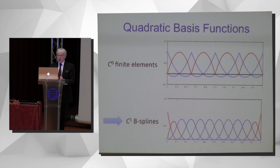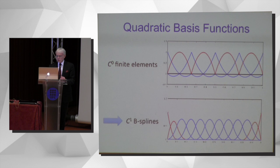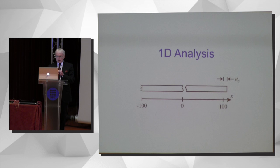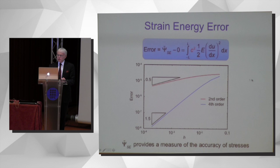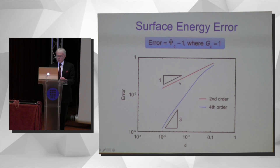To have a simple implementation of the fourth-order theory, you need smooth basis functions, unless you want to go to mixed methods with finite elements — which will give suboptimal rates. The optimal way to deal with it is to use smooth splines in conjunction with this theory. In a simple 1D example — just a bar that we fracture — the convergence of the strain energy and the surface energy is much faster with the fourth-order theory compared to the second-order theory.